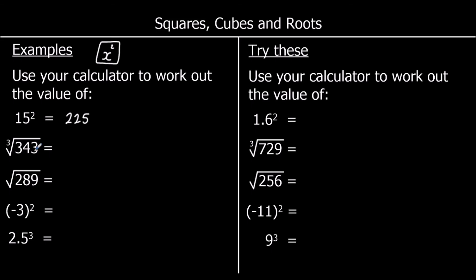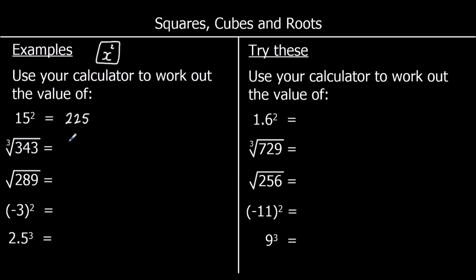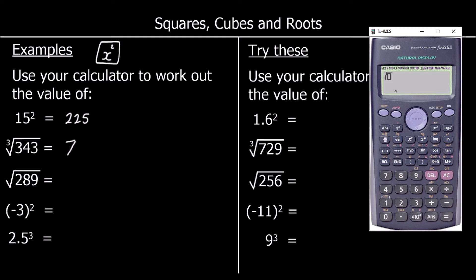The second question is the cube root of 343. The cube root button is just above the square root button — you can see a 3 and then a square root symbol. Press the shift button, then the square root button to bring up the cube root, type 343, press equals, and that's 7. So the cube root of 343 is 7. For the next question, press the square root button, type 289 inside the root, and that gives us 17.